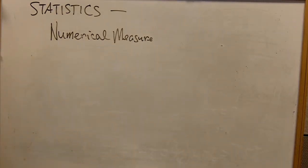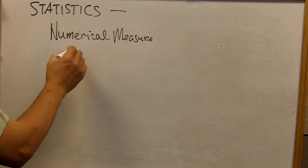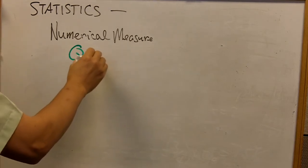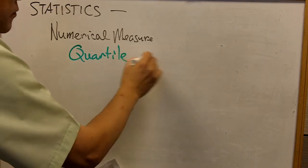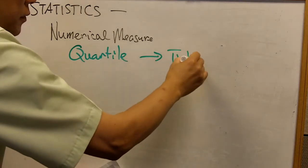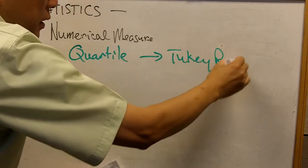Hello, this is Dr. Caleb Chan, and we are doing the statistics series. Today we'll be talking about quartile measures, and then we'll also talk about the Tukey rule.